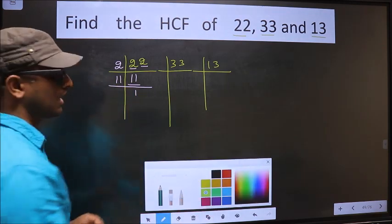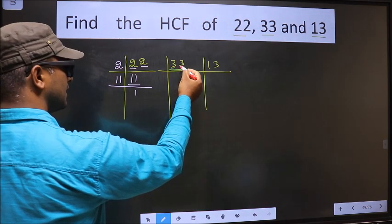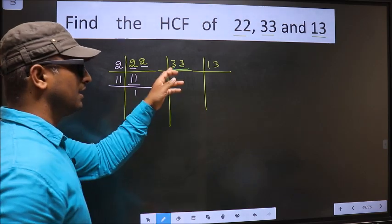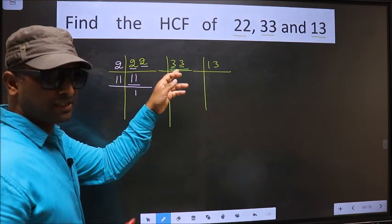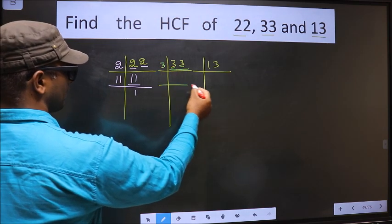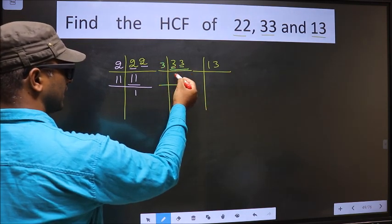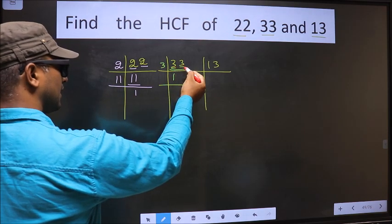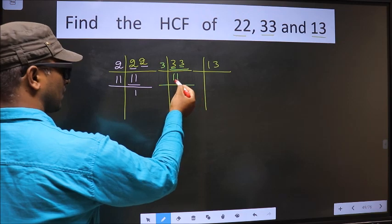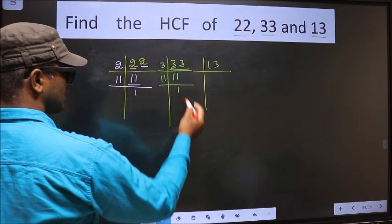Now the other number is 33. Each digit sums to 3, and 3 is a prime number, so we directly take 3 here. 3 divided by 3 gives 3, and 3 divided by 3 gives 3. Now here we have 11. 11 is a prime number, so 11 divided by 11 gives 11.